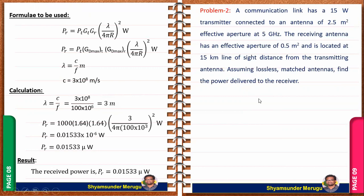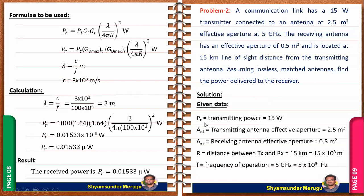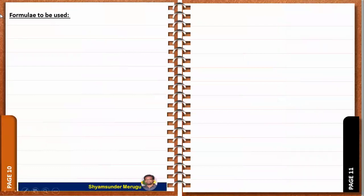Now looking at one more numerical problem. A communication link has a 15-watt transmitter connected to an antenna of 2.5 m² effective aperture operating at 5 GHz. The receiving antenna has an effective aperture of 0.5 m² and is located at 15 km line-of-sight distance from the transmitting antenna. Assuming lossless matched antennas, find the power delivered to the receiver. The given data: PT is 15 W, AET is 2.5 m², AER is 0.5 m², R is 15 km, and F is 5 GHz.